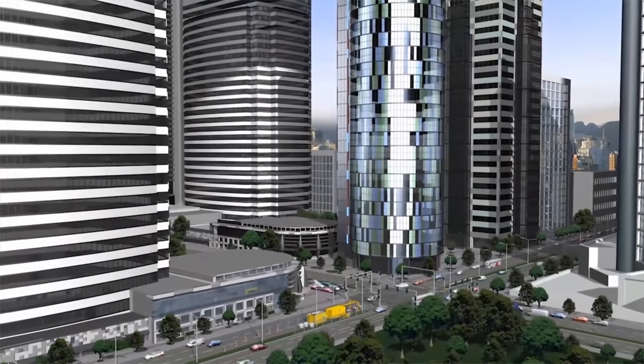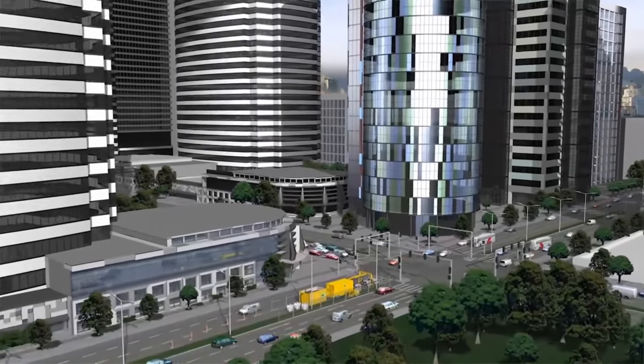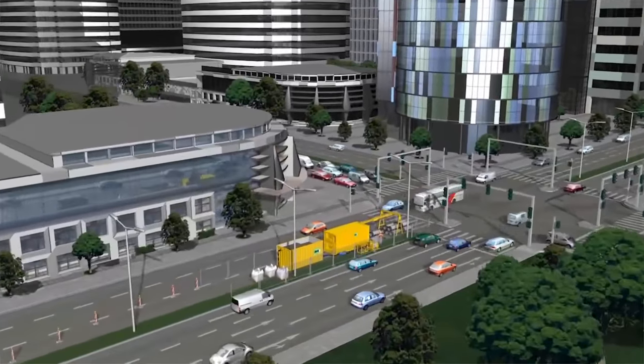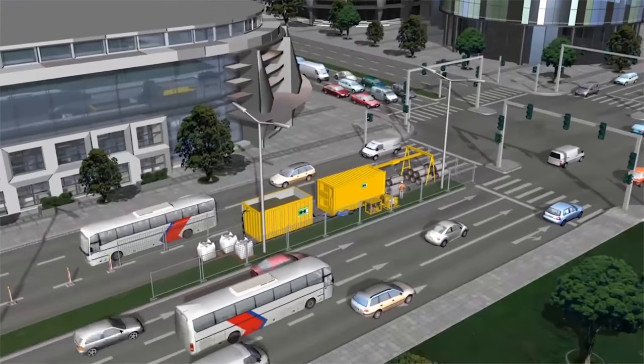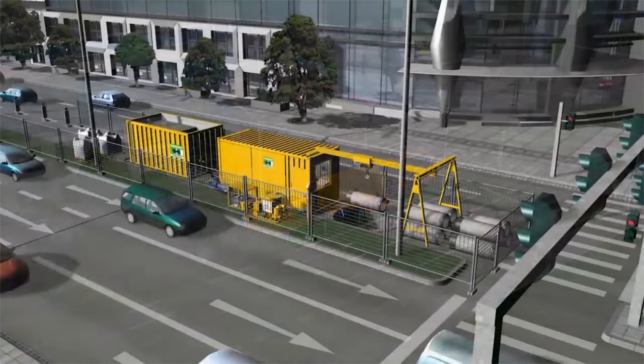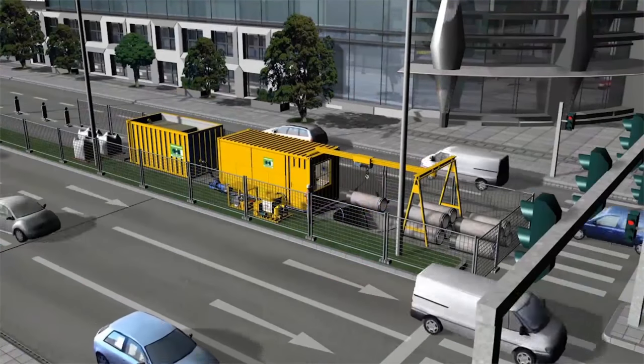The following animation shows the installation of new sewer pipes DN600 in an urban crossroad with dense traffic. The whole construction site can be located in a way that only one lane is blocked.